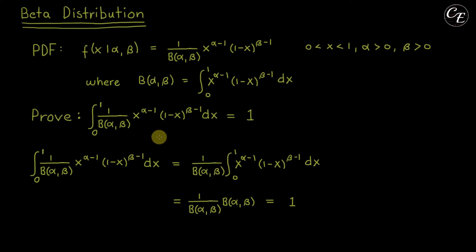Hello everyone, in this video I'm going to show you that the integral of the probability density function of a beta distribution with limits where its domain is defined is equal to 1.